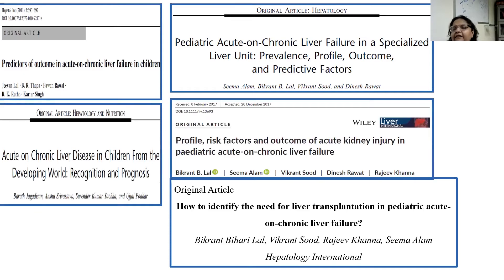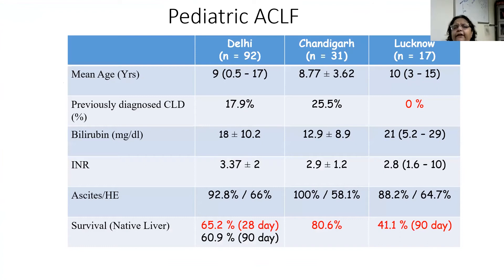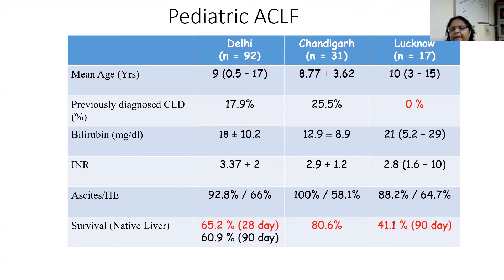There are five articles in the PubMed search on pediatric acute and chronic liver failure pertaining to the APACEL definition, and three of them are from our own center. Together these articles tell us that the mean age of patients is around the end of the first decade. Previously diagnosed chronic liver diseases are usually very small in percentage — most are unknown CLDs. Bilirubin is high, ranging from 12 to 21. INR is high, hovering around three. Ascites is present in almost 100% of cases. Hepatic encephalopathy may be present in two-thirds. Survival is between 40 to 60% by 90 days.